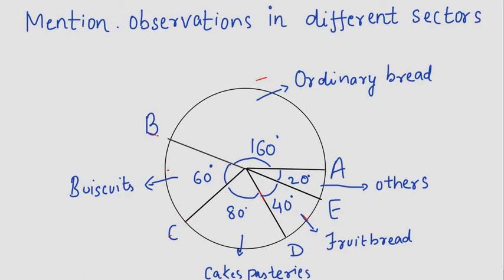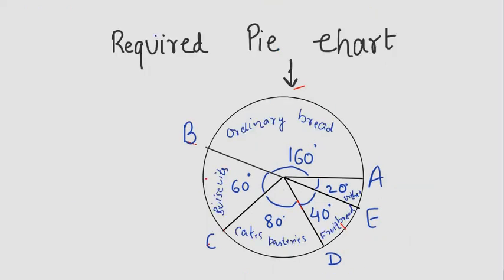After that, mention the observations in different sectors. 160 degrees represents ordinary bread revenue. Biscuits have a central angle of 60 degrees. Cakes and pastries have 80 degrees, fruit bread has 40 degrees, and others have 20 degrees. This is the final pie chart and this is our required pie chart.